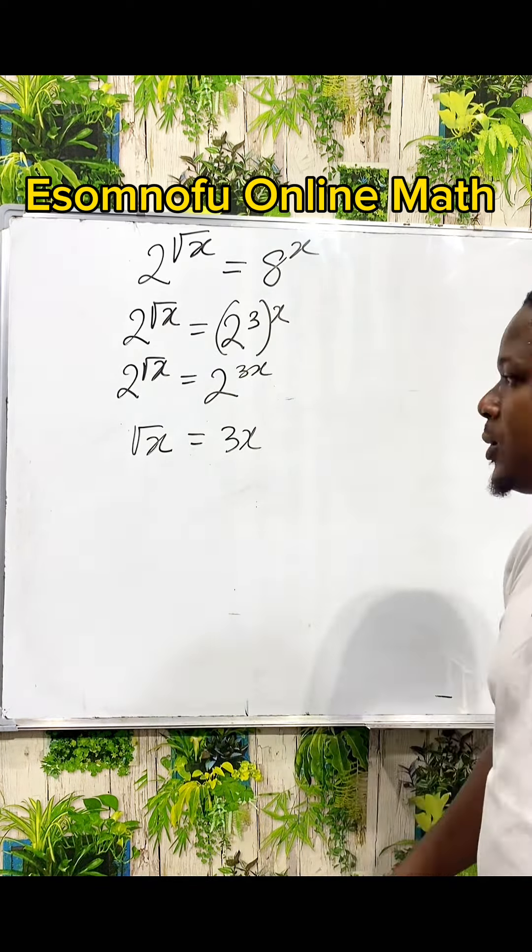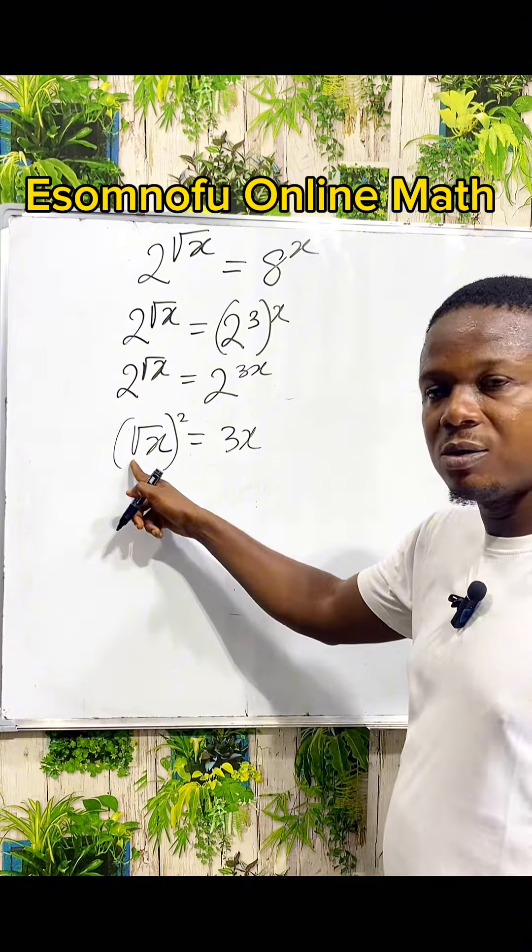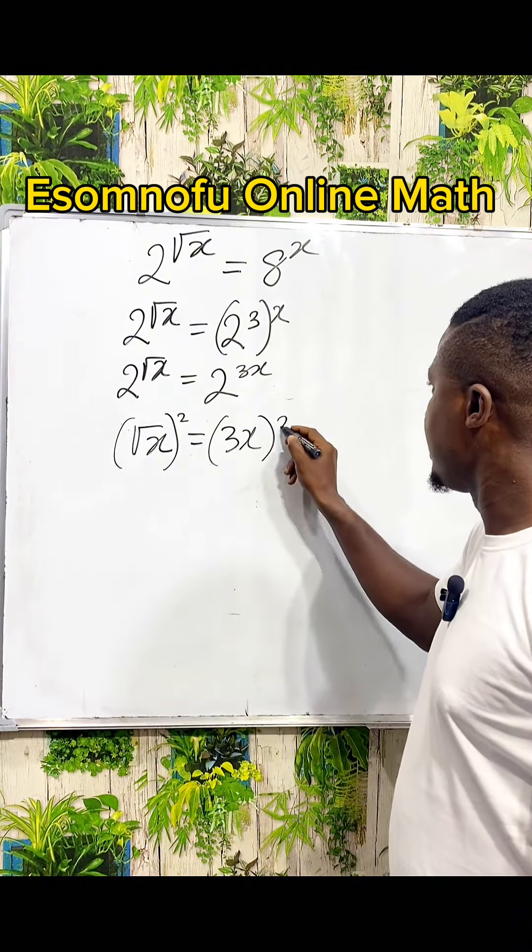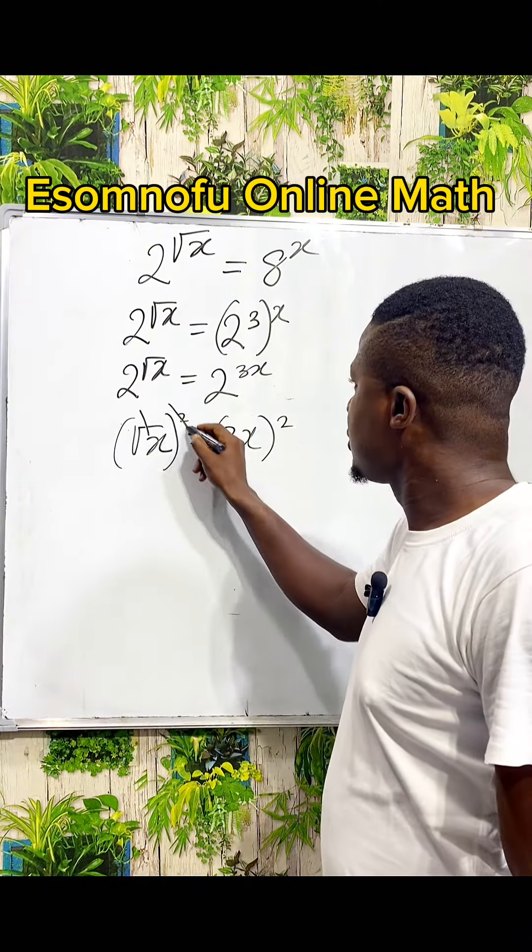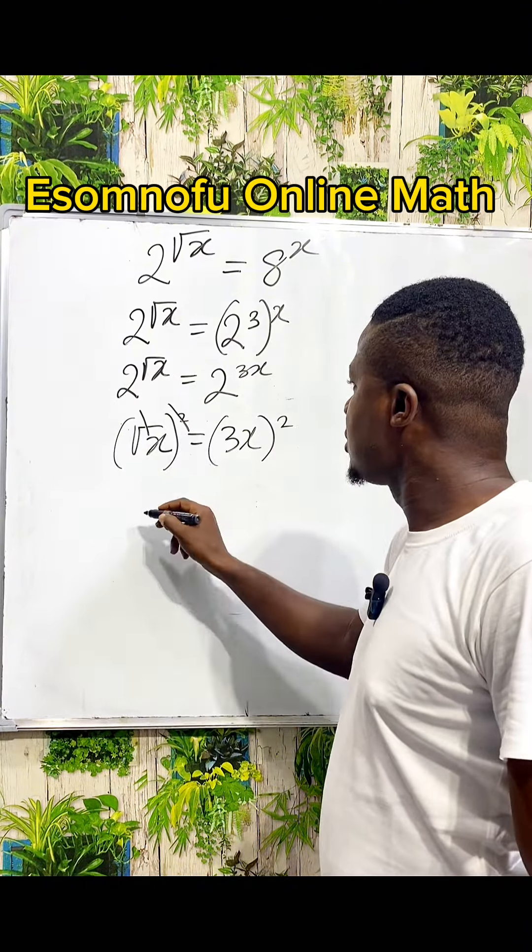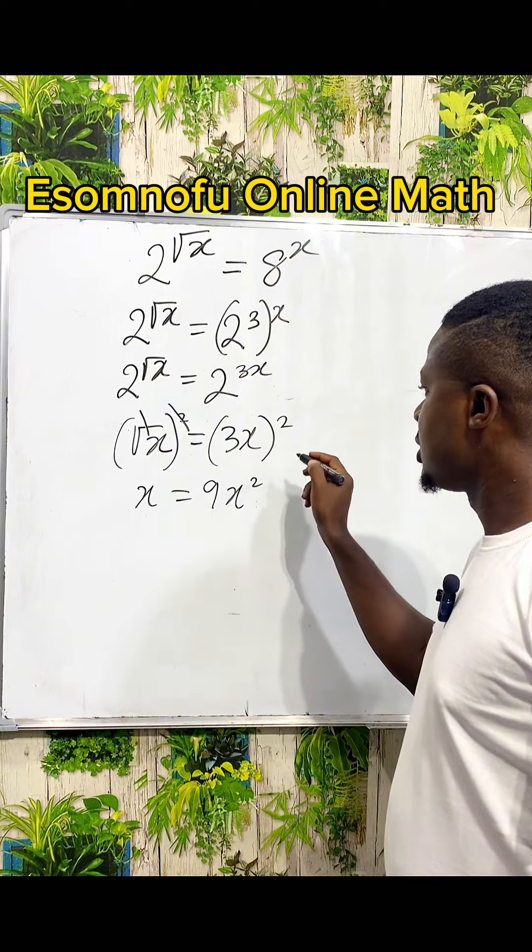The essence of squaring both sides is to kill this square root. We are squaring both sides. Square cancels square root, we have x equals 3 squared is 9, then x squared. This is what we are having.